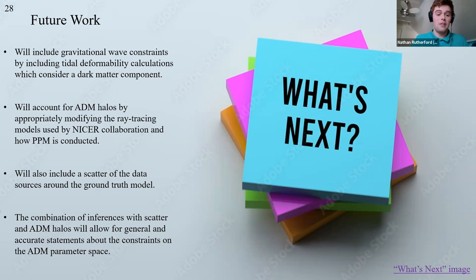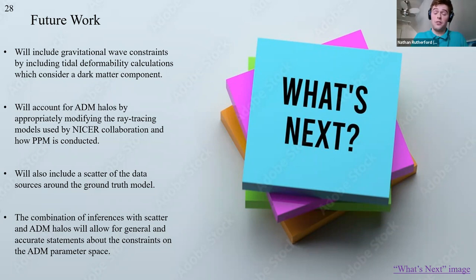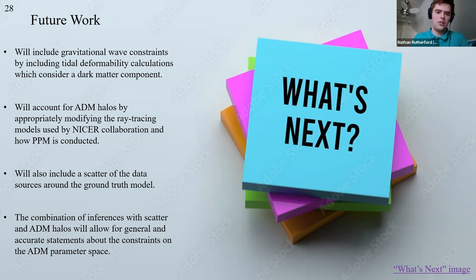Future work will include gravitational wave constraints by including tidal deformability calculations that consider a dark matter component. We'll also account for ADM halos by appropriately modifying the ray-tracing models used by the NICER collaboration and how PPM is conducted. We will also include scatter around the data ground truths, as we considered only the simplest case here. The combination of inferences with scatter and halos can allow for general and accurate statements about constraints in the ADM parameter space.